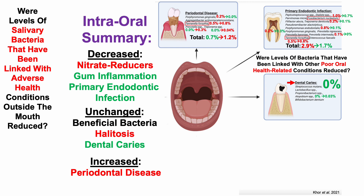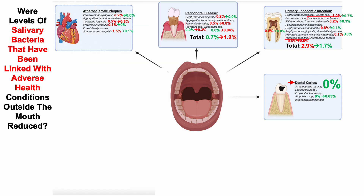What about salivary bacteria linked with adverse health conditions outside the mouth — were they reduced? For bacteria related to atherosclerotic plaque, the first test was 2.3%, reducing to 0.9% for the second test. However, if I'm going to further reduce that 0.9%, Tannerella forsythia again pops up — 0.8% of the 0.9% comes from that one bacterium alone.